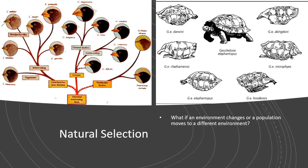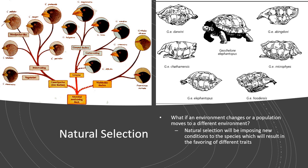What if an environment changes or a population moves to a different environment? We see this in the Galapagos Islands — a tortoise washed up on an island, a small population of finches were washed up on these islands, which have a different environment than the mainland. Natural selection in this new environment will impose different conditions, selecting for different traits, so organisms will not look like their ancestors because of different selection pressures.